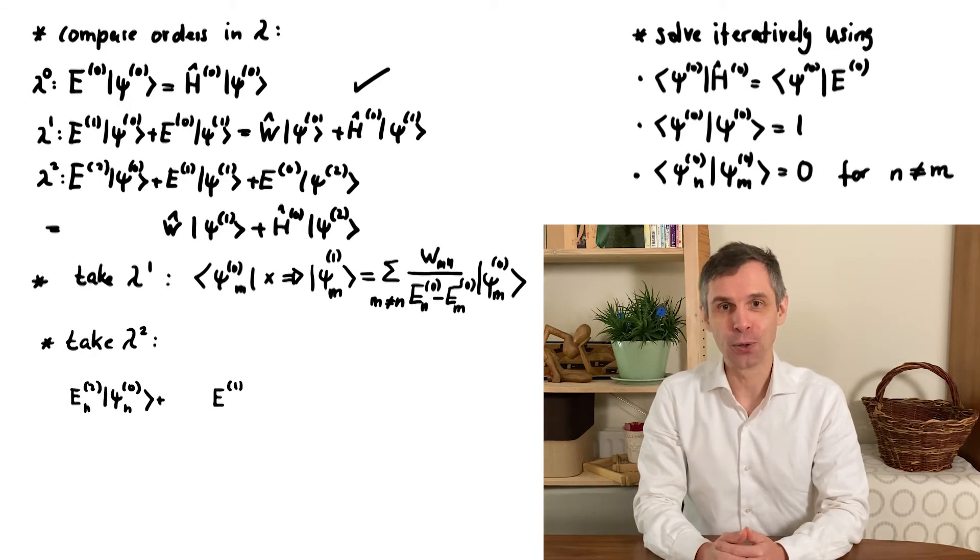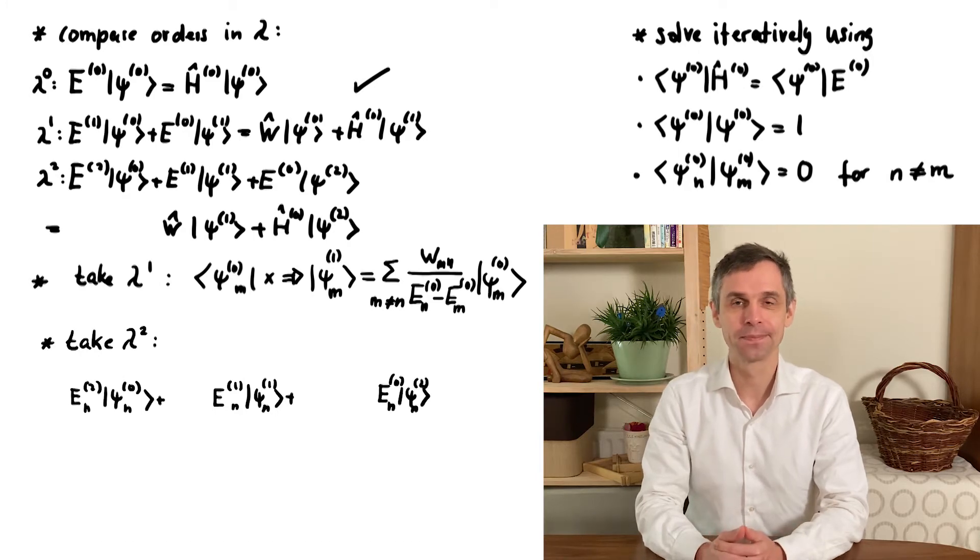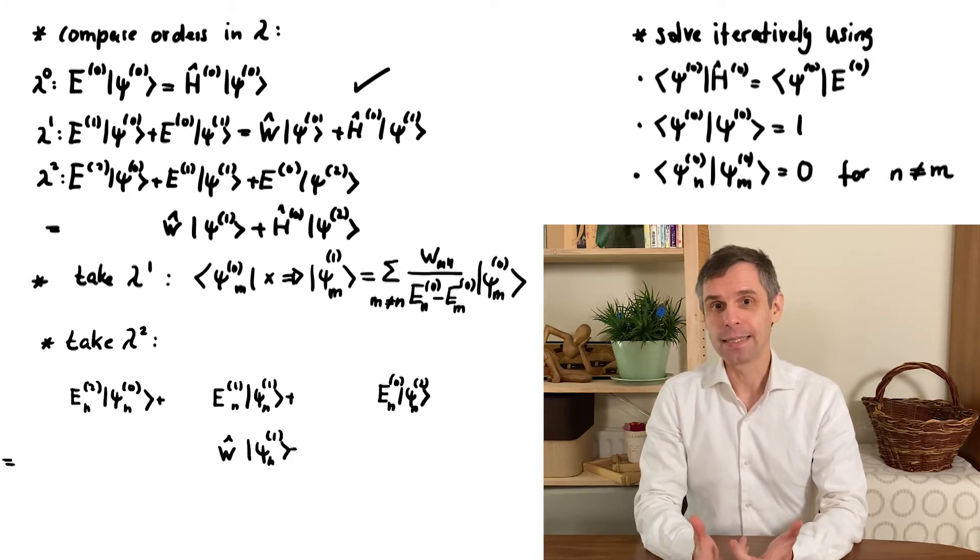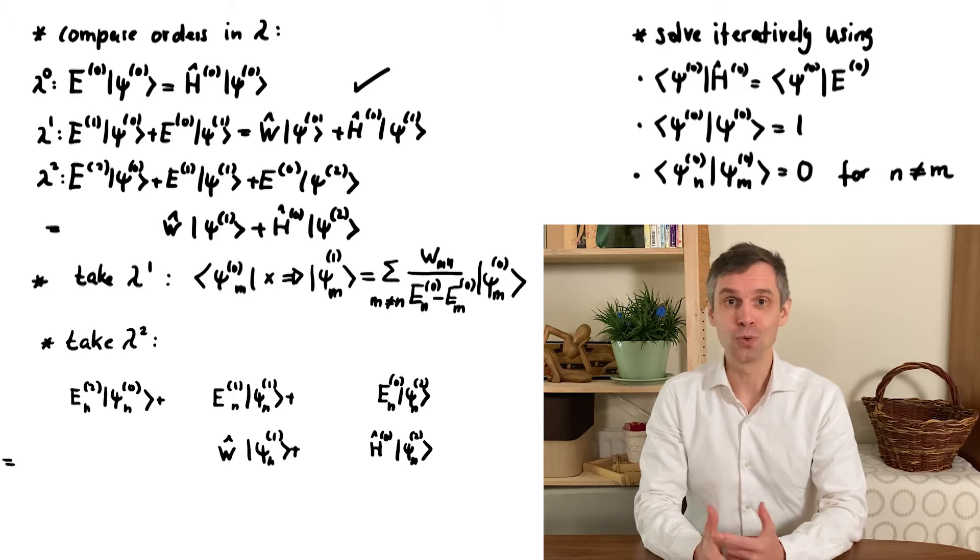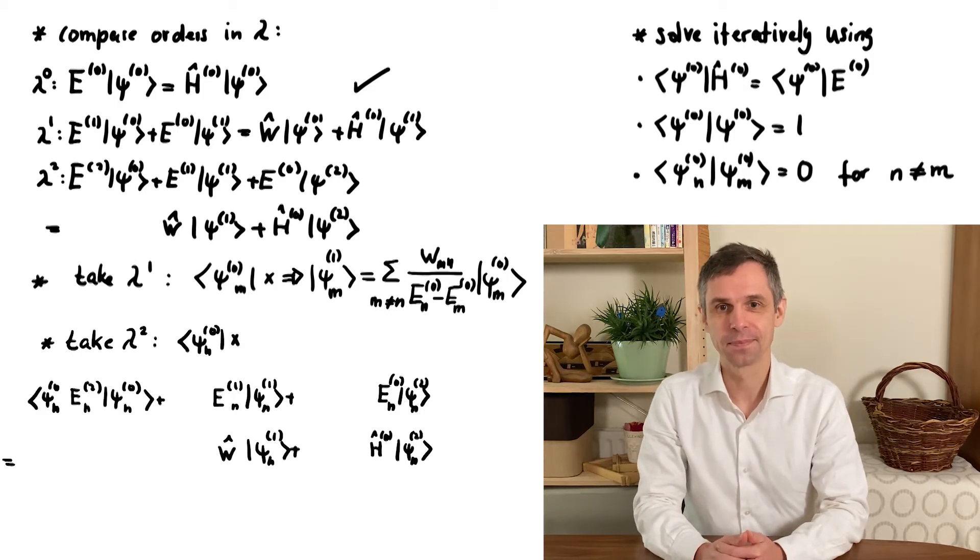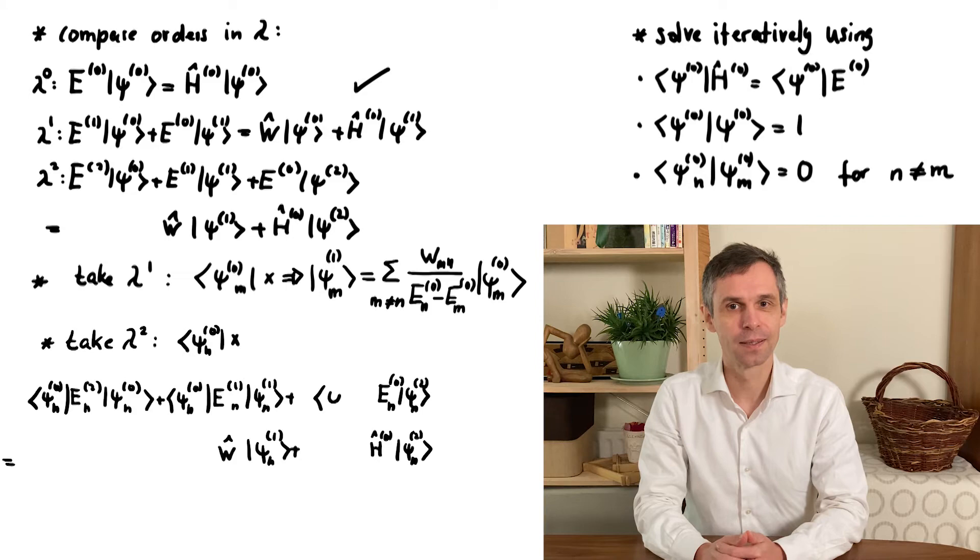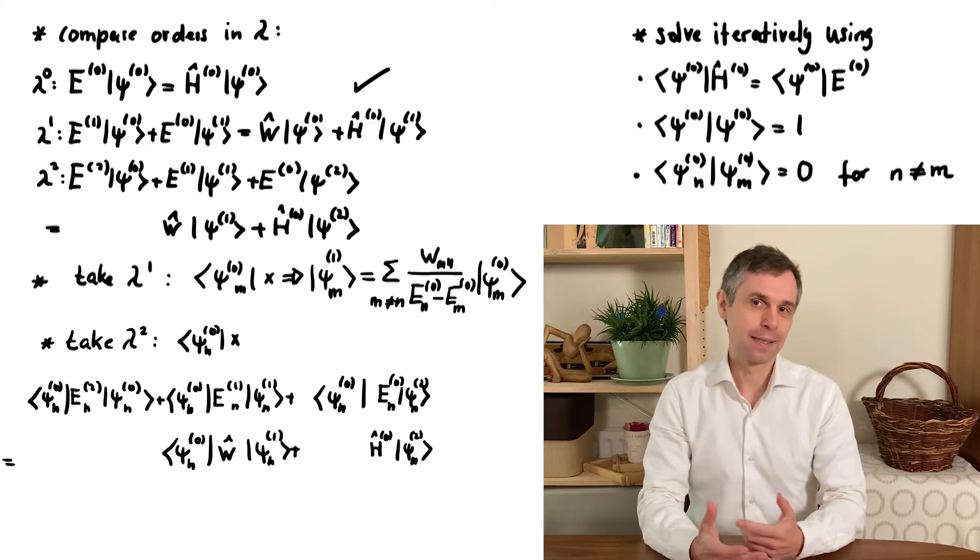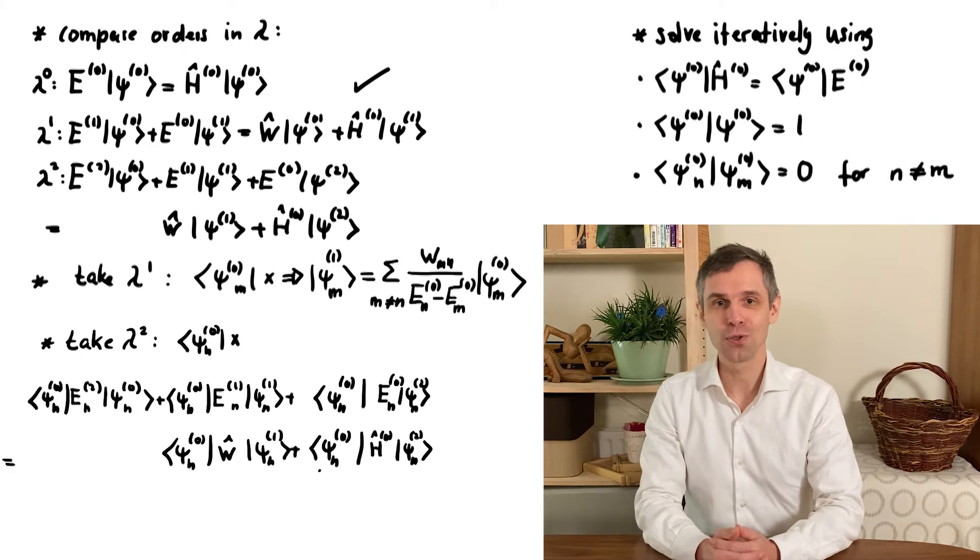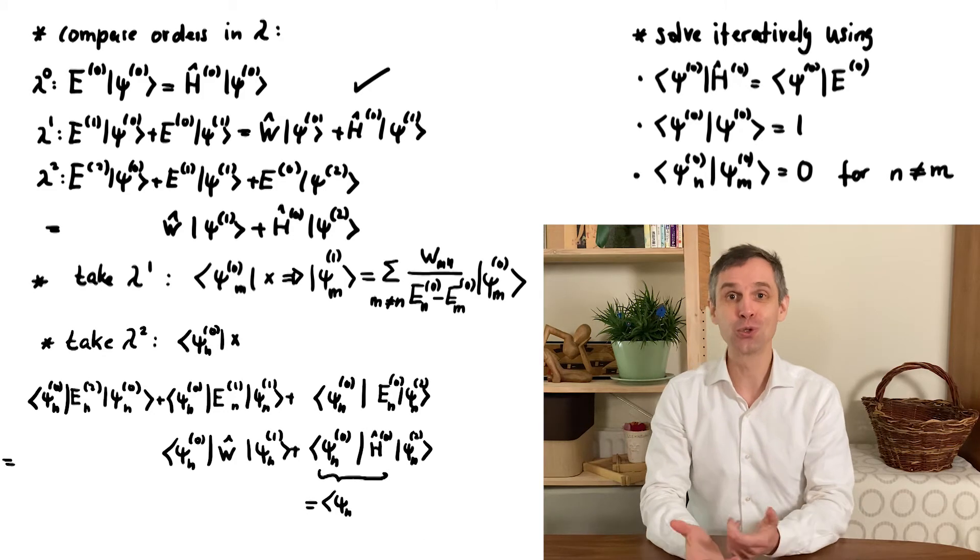So following our general approach, we now take the relation in second order and multiply this by the quantum state of the simpler system. I now keep the index n as the other states will soon reappear. We can again invoke the Schrödinger equation for the dual state to cancel two terms.